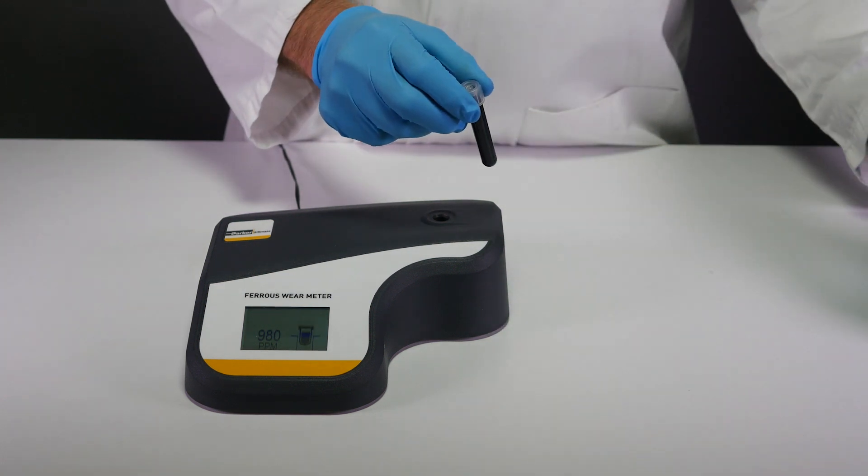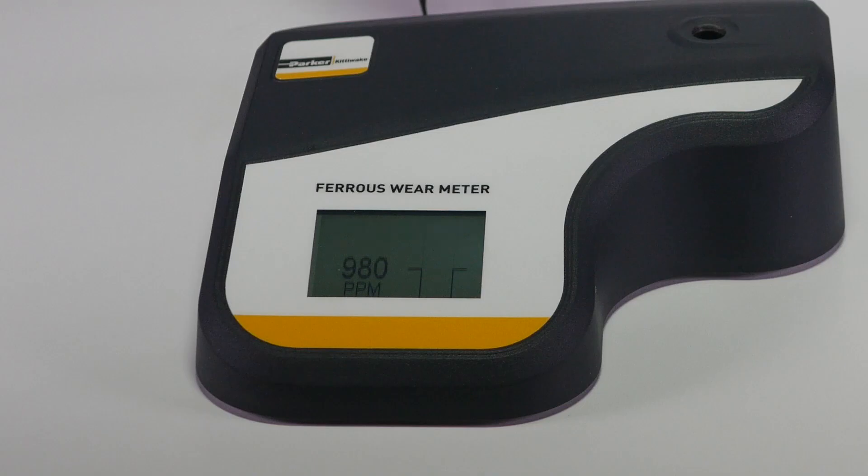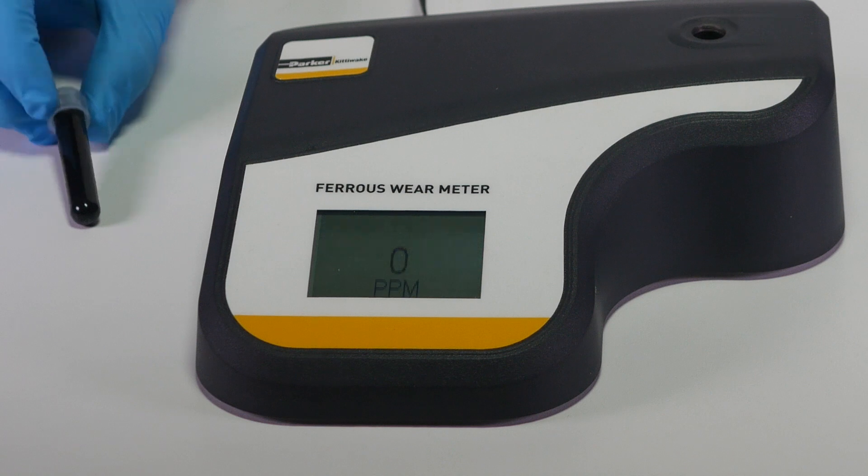As with the check standard, simply insert the oil sample into the Ferris wear meter for approximately one second, then remove. The result will display shortly after removal.